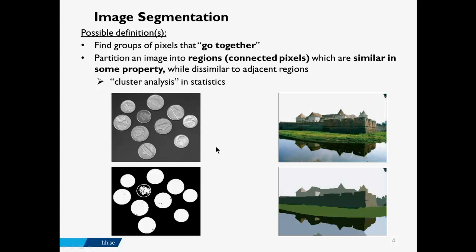Here we can see two examples of image segmentation. On the left, some coins where the target is to mark regions where the coins are. On the right, a more complex image where we have grass areas, a building, the shadow of the building, water, and sky. These are different regions conceptually, and the ideal situation would be that we have a segmentator that separates these different regions.